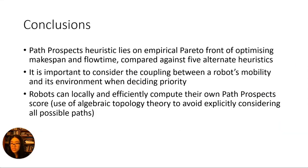To conclude, we designed a novel prioritization heuristic and demonstrated that it lies on the empirical Pareto front of makespan and flow time. This shows that there is an important coupling between a robot's mobility traits and its environment — considering them together finds better solutions than only considering one or the other.